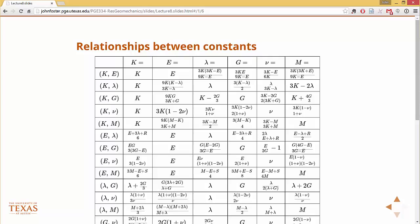The way you read this is if you are given, say, K and G, so if you're given the bulk modulus and the shear modulus and you want to know Young's modulus, it's 9K times G over 3K plus G. And here's the lambda just as we defined it. If you're given K and G and you want to know lambda, it's K minus 2/3 G.